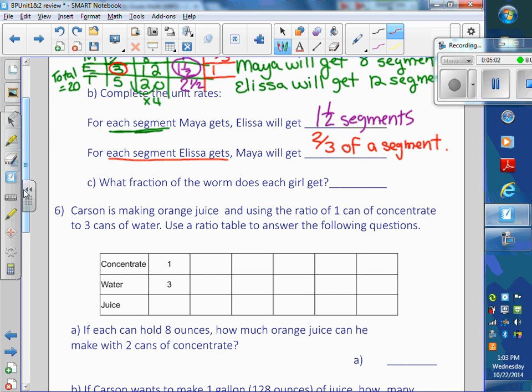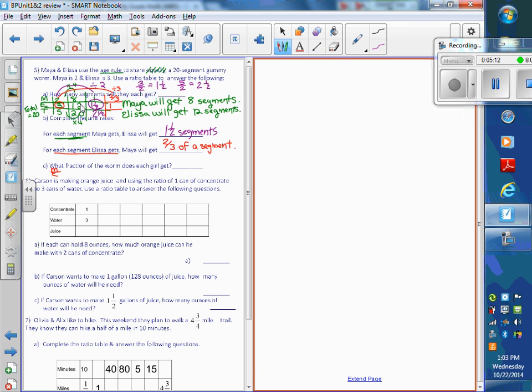Remember Maya to Alyssa? This might have needed to be on scratch paper for you guys. Maya to Alyssa. Maya's part was 2 to 3 for Alyssa. Maya to Alyssa the total is 1. So I want to get this to 1 worm. So I'm going to divide by 5. 2 fifths, correct. And then 3 fifths.